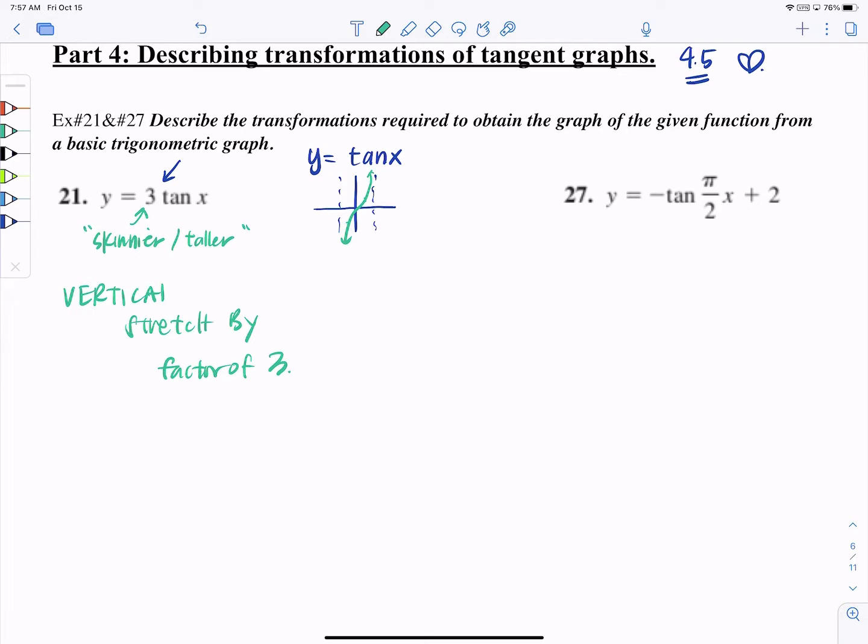Look at number 27, it's a little bit different. So I want you to imagine what happened to the period from the original. This one, the period is π. What happened to the period? Did it take longer or did it take a shorter amount of time to complete one cycle?